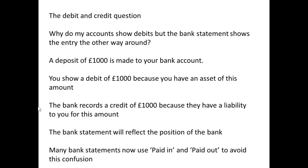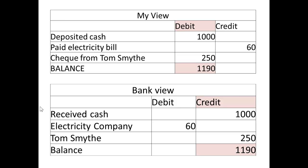The bank statement reflects the bank's position and your cash account reflects your own position. Bank statements will often use the terms 'paid in' and 'paid out' to help avoid confusion. So, you record a debit of £1,000 for cash put in, a debit of £250 for a check received, and a credit for an electricity bill because that's money going out. The bank takes the opposite view: the £1,000 and £250 paid in are credits, and the £60 paid out to the electricity company becomes a debit.